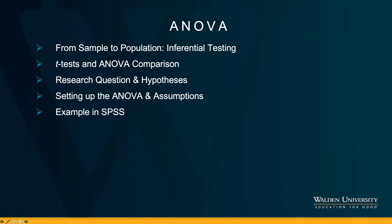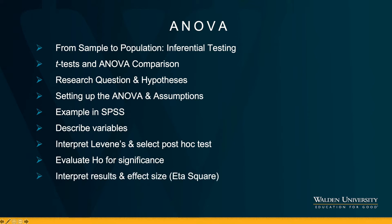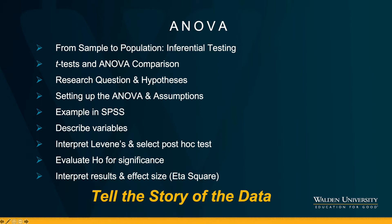I will show you how to set up the ANOVA and talk about the assumptions specific to this test. We will then move to SPSS to show an example and interpret the results by describing the variables, interpreting the Levene's, selecting the appropriate post-hoc test, evaluating the null hypothesis at model level for significance, and interpreting the results and the effect size. For this test, the effect size is called eta-square.